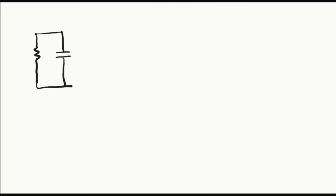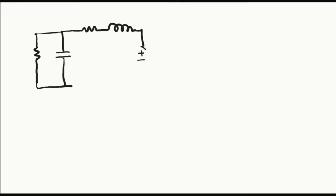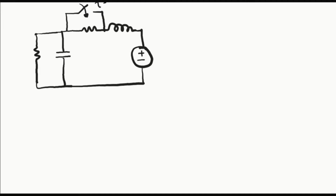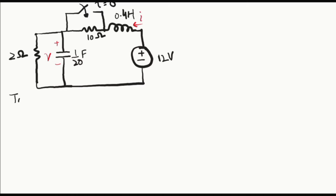Now, to put theory into practice, let's work through a numerical example. Imagine we have a second order circuit with specific parameters — resistor, capacitor, inductor, and a voltage source. There is a switch which changes its position at t equals zero, which is the switching time. We have the inductor current and the voltage across the capacitor, and we will calculate the initial and final values step by step.